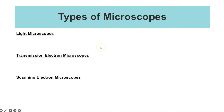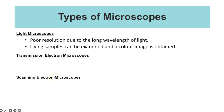Starting with microscopes — there are three types you need to be aware of: light microscopes and two types of electron microscopes. Light microscopes have a poorer resolution compared to electron microscopes, because resolution is determined by the wavelength of light, and visible light has a longer wavelength than electrons. An advantage of light microscopes is that you can view living samples and get colour images without artificially adding colour afterwards.